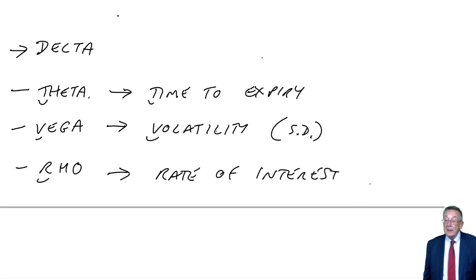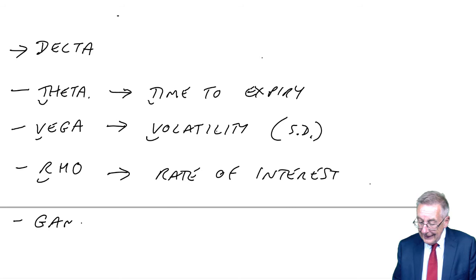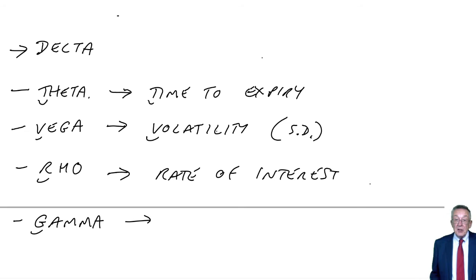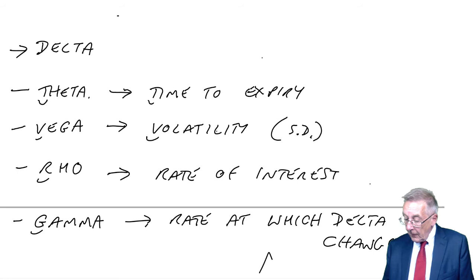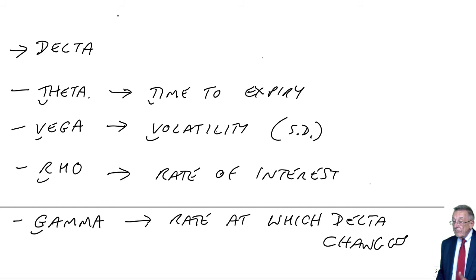The last one is a bit odd. Gamma. I'm certainly not about to do this particularly. It's the rate at which delta changes. All of that is simply for written bits of questions in case he mentions the Greeks, with the one exception of delta.